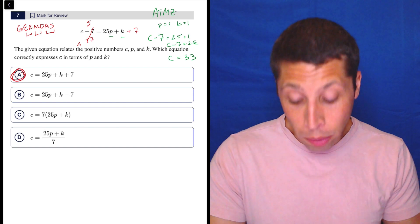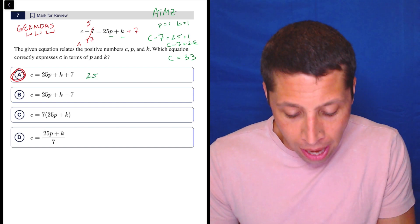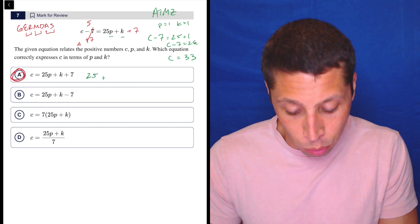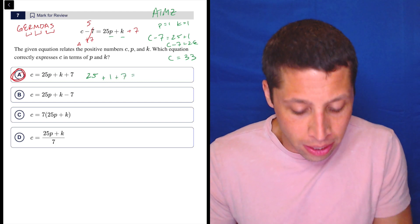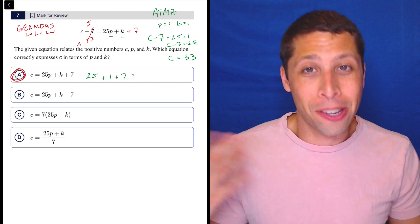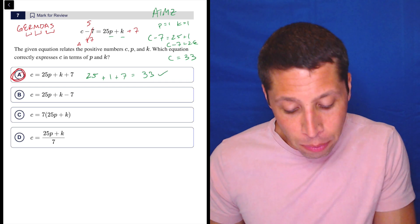What we really do here, we would just plug those same numbers in. 25 times P is one, so that's still 25 plus one plus seven. 25 plus one is 26, 26 plus seven is 33. So that would work.